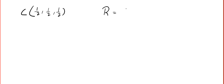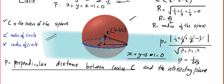So we have the center of the sphere: (1/2, 1/2, 1/2); radius of the sphere: √3/2; and perpendicular distance from center to the plane: 1/(2√3). In spheres, you learn the intersecting condition and the tangent condition. The intersecting condition is simple Pythagoras theorem — R² = r² + P² — looking at R, r, and P in the picture.